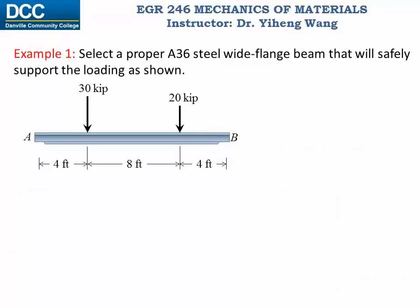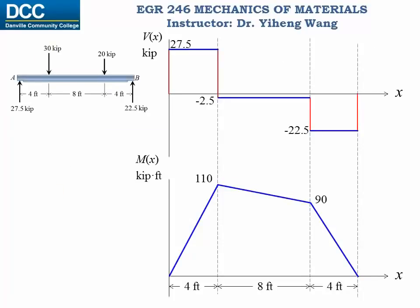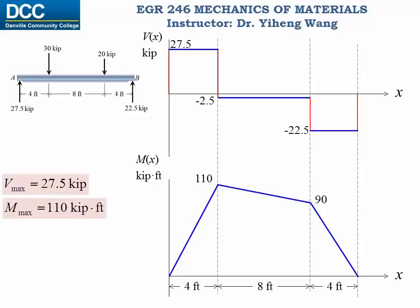So as we've done many times now, we start this problem with the free body diagram and then determine the support reactions. Then we construct the internal shear force diagram as well as the internal bending moment diagram. From these diagrams, we can determine the maximum internal shear force is 27.5 kilopounds, and the maximum bending moment is 110 kilopound-feet occurring at a location 4 feet from the left end.